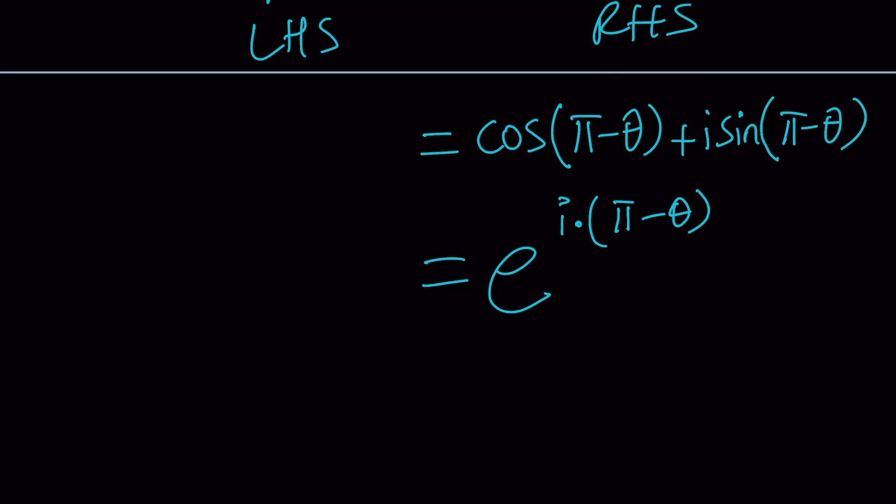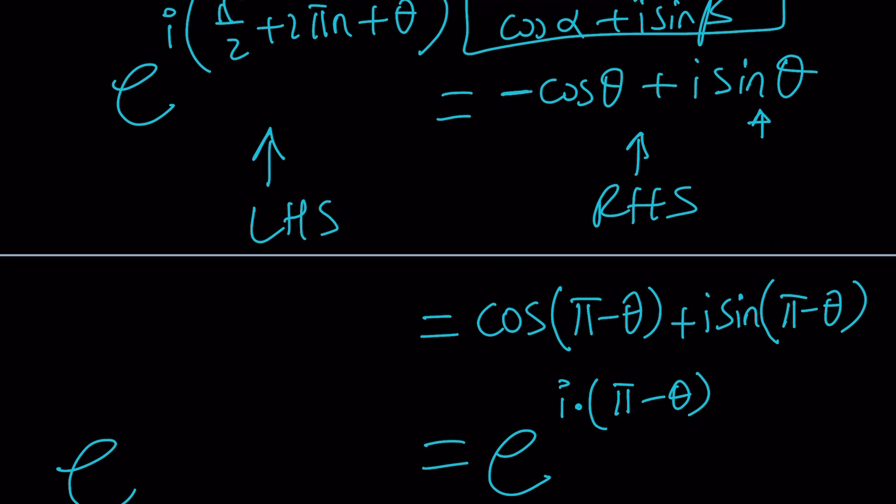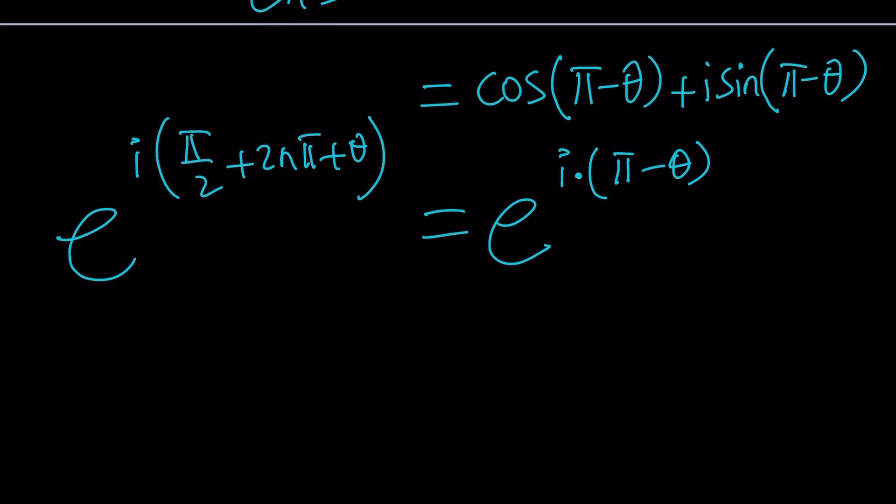And the left-hand side is a little longer: pi over 2 plus 2n pi plus theta. Remember, our goal is to solve for theta, and we're so close. Okay, this is still the first method? Yes. I'm sorry, almost done.